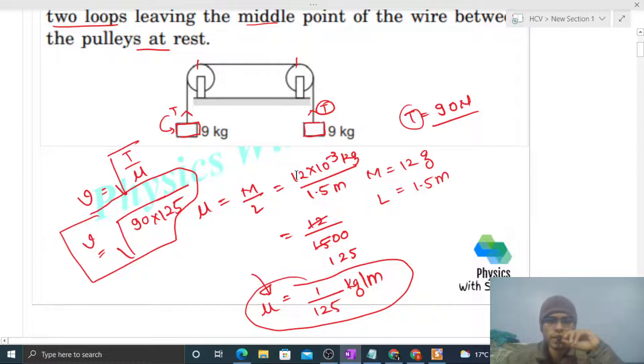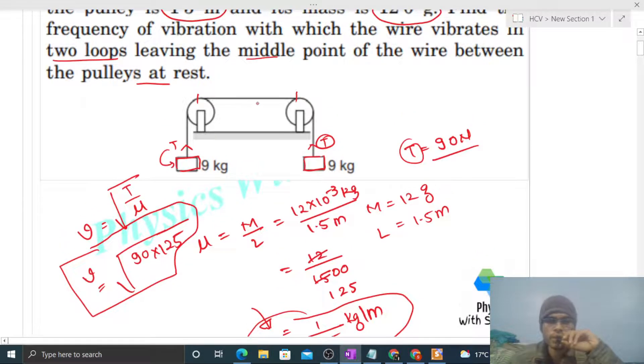Now what is given: the wire between the pulleys vibrates in two loops. It means we have two loops formed, something like this, such that the center point remains at rest. Right?